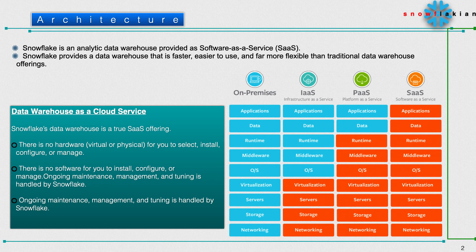Coming to on-premises: the end-to-end is completely installed, upgraded, and managed by the end user. That means applications, data, runtime, middleware, OS, virtualization, servers, storage, and networking — all of this is completely designed, installed, upgraded, and maintained by us.